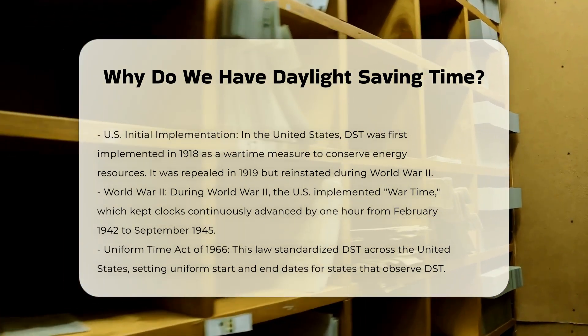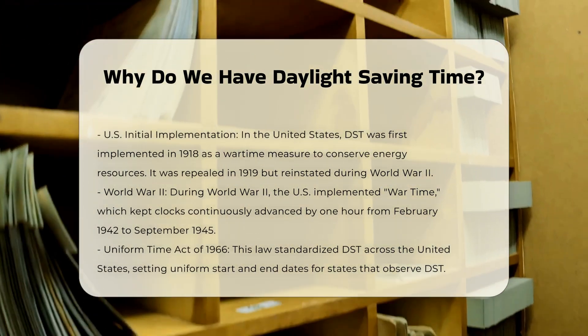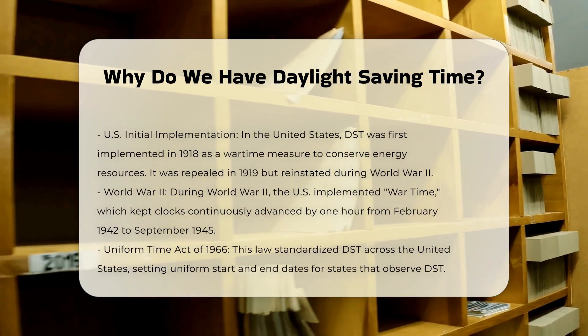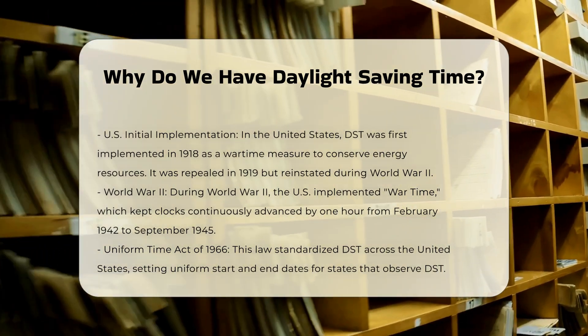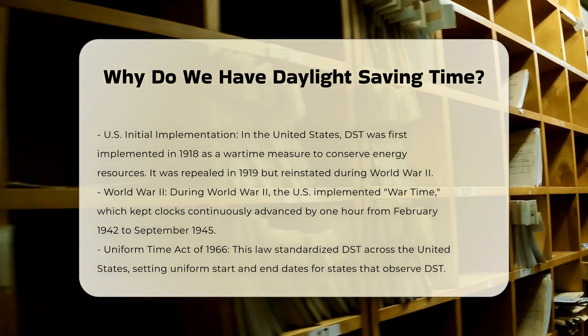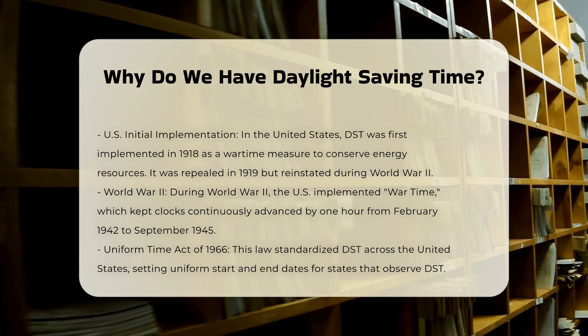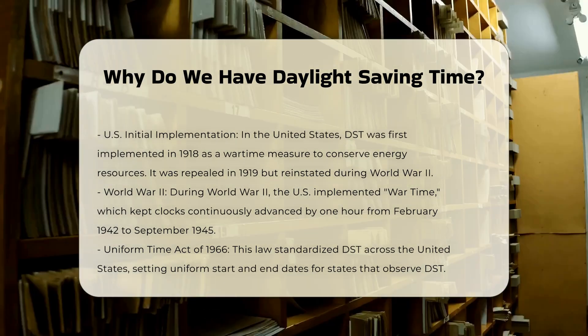For example, in American temperate latitudes, the sun rises early in the summer, and by treating an earlier hour as if it were later, people can wake up closer to sunrise and be active in the evening light.